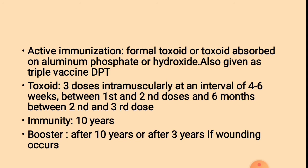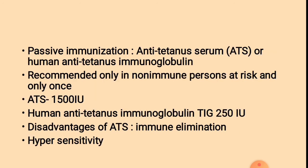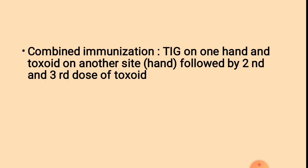Booster dose is given after 10 years, or after 3 years if wounding occurs. Passive immunization involves anti-tetanus serum or human anti-tetanus immunoglobulin given to patients. It is recommended only for non-immune persons at risk and only once. Anti-tetanus serum is 1500 IU; human anti-tetanus immunoglobulin (TIG) is 250 IU. A disadvantage of ATS is immune elimination and hypersensitivity reactions. Combined immunization means TIG on one hand and toxoid on the other, followed by 2nd and 3rd doses of toxoid.